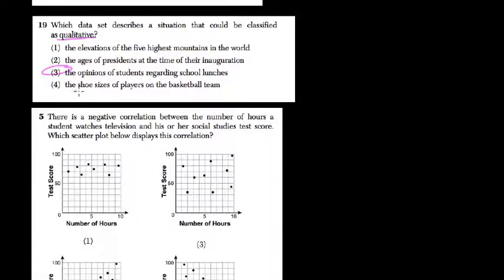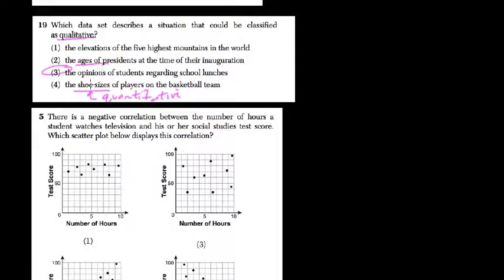In all these other ones, the shoe sizes of players — we can measure that with a number, so that's quantitative, quantity or number. So is choice two, the ages, right? Ages and shoe sizes and elevations — all those things that are measured with a number or quantity. They're not qualitative.